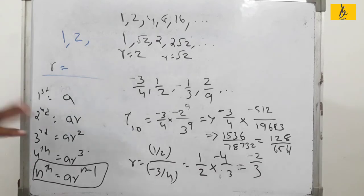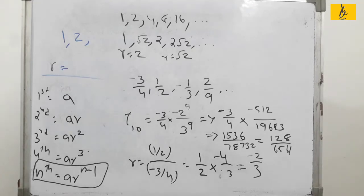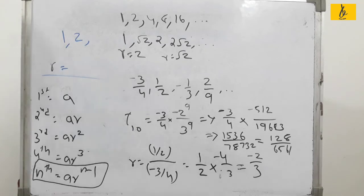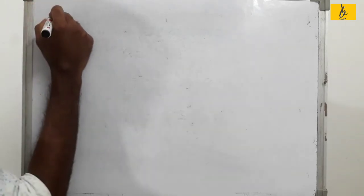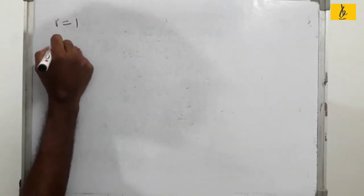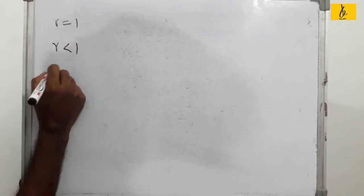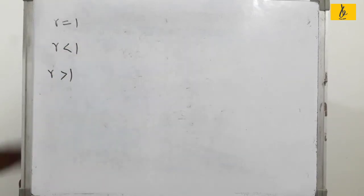In this Geometric Progression, we find the 10th term. Now, what is the sum to n terms of a GP? There are 3 cases: Case 1, common ratio R equals 1. Case 2, common ratio R is less than 1. Case 3, common ratio R is greater than 1. These 3 equations give the sum.